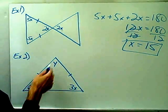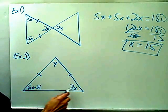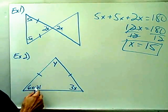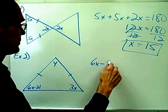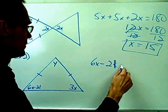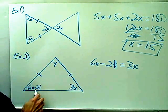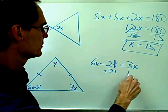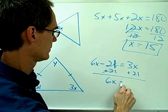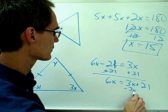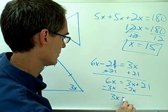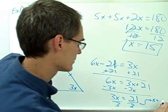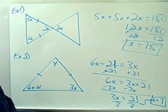Example number two: again I have an isosceles triangle with two legs and two base angles. From the isosceles triangle theorem, the base angles of an isosceles triangle are congruent, so I set the two expressions equal to each other: 6x minus 21 must equal 3x. Solving — adding 21 to both sides, subtracting 3x from both sides, then dividing both sides by 3 — I get x equals 7.